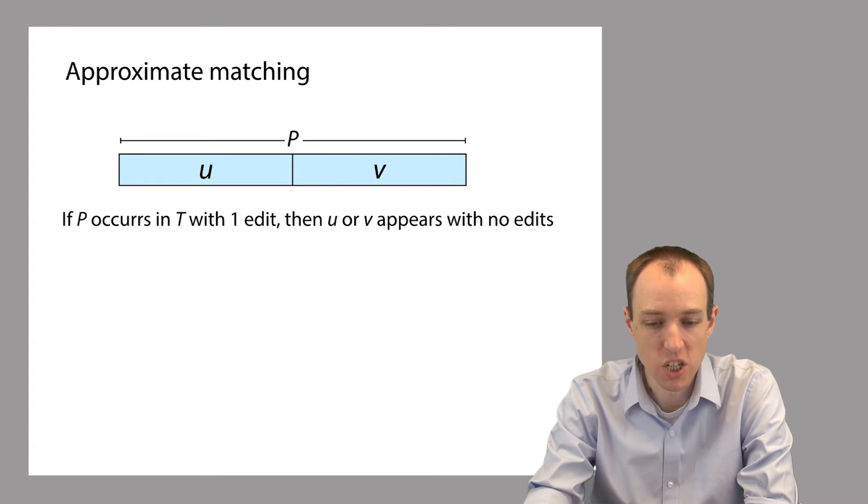In other words, the edit can change the sequence of u with respect to T so that it doesn't match anymore, or the edit can change the sequence of v so that it doesn't match anymore, but it can't change both.